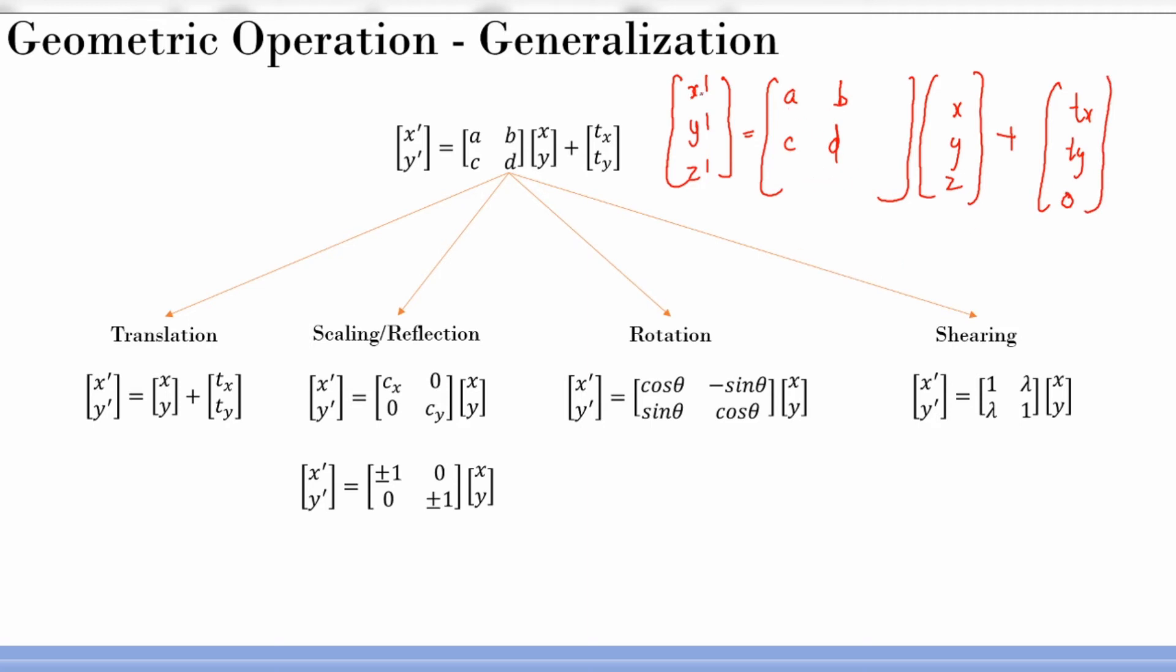What x dash is - x dash is a into x plus b into y plus this into z, this has to be 0 right. And similarly y dash is c into x plus d into y plus this guy into 0. This is 0 into z.